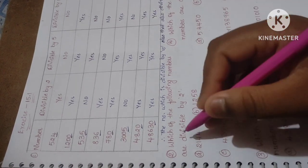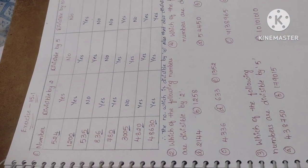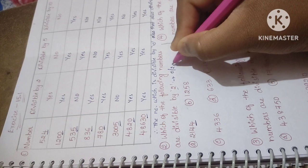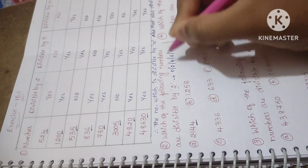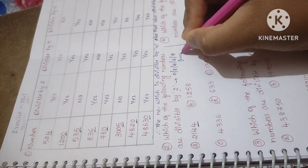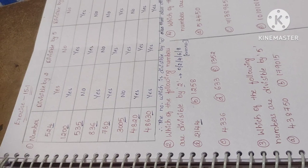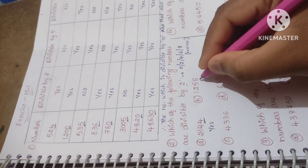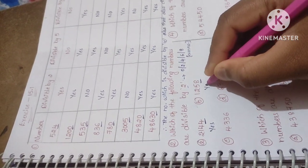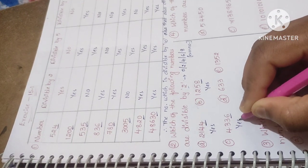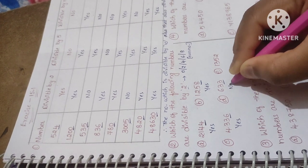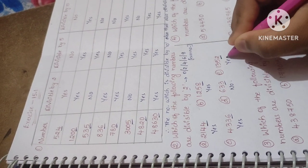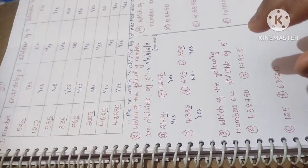Problem 2: using divisibility tests, determine which numbers are divisible by 2. The rule: unit digit must be 0, 2, 4, 6, or 8. Results: 2144 — unit digit 4, yes; 1258 — unit digit 8, yes; 4336 — unit digit 6, yes; 633 — unit digit 3, no; 1352 — unit digit 2, yes.